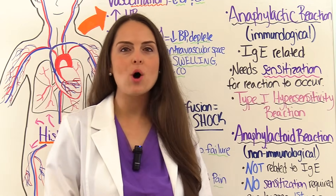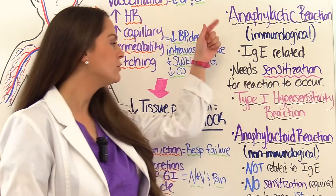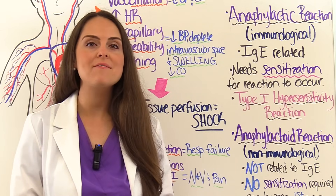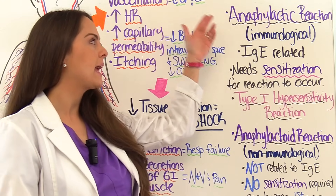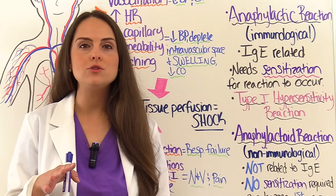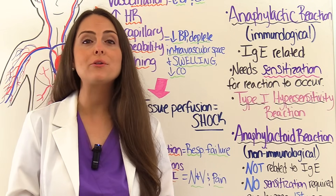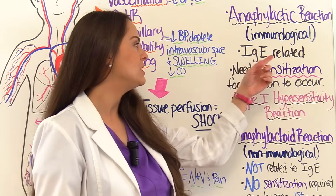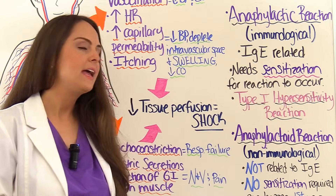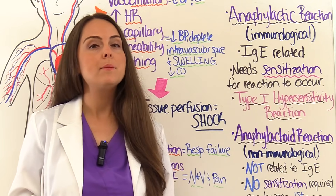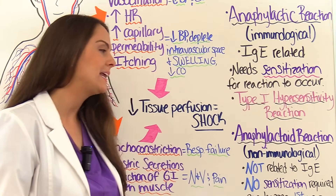There are two different types of reactions that can lead a patient into anaphylactic shock. The first is called an anaphylactic reaction, which is due to the immune system — it creates the antibody IgE in response to the allergen, so it's IgE-related. The other type is called an anaphylactoid reaction, which isn't related to the immune system and the body does not create IgE.